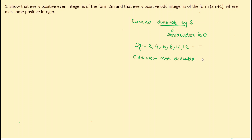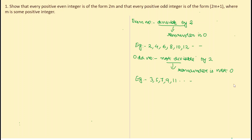Examples of odd numbers are 3, 5, 7, 9, 11, and so on. Now let us select a number from even numbers, like 4, and 5 from odd numbers, and test whether Euclid's Division Lemma can be applied here.